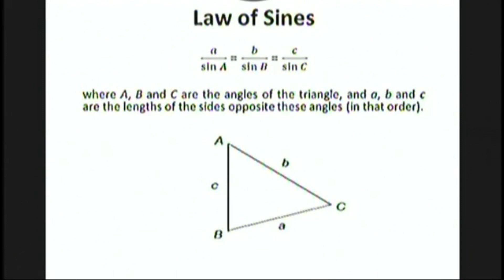Let's start with the law of sines. It says that a over sine A equals b over sine B equals c over sine C, where capital A, B, and C are the angles of the triangle, and little a, b, and c are the lengths of the sides opposite these angles in that order. Notice that little a is opposite angle big A, little b is opposite angle big B. So when you're taking these quotients, you're always using the opposite side and angle.